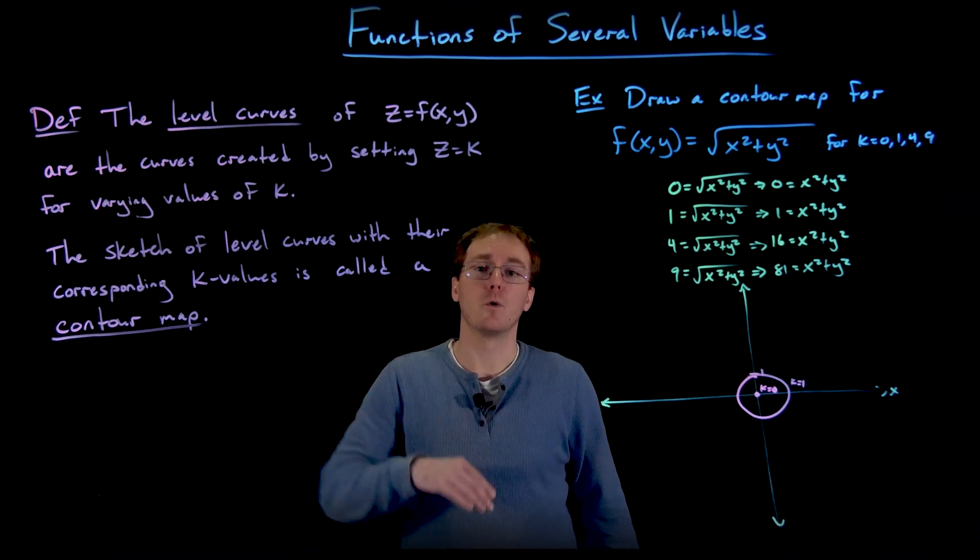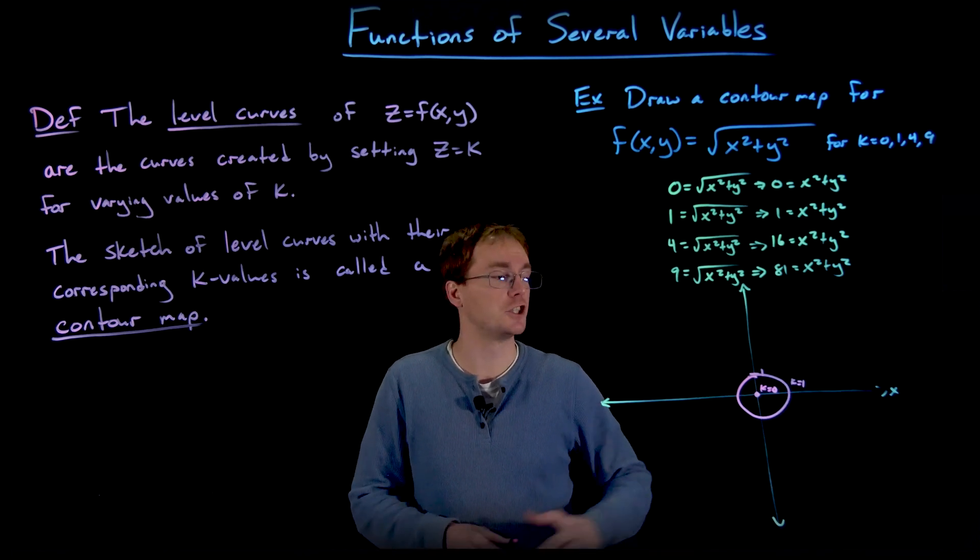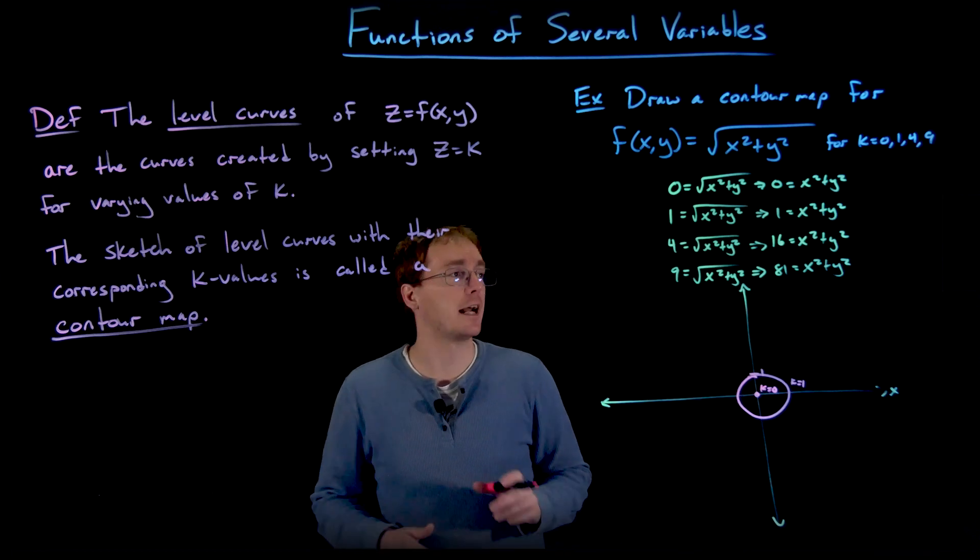The intersection of the z = 1 plane with our surface is going to generate this circle of radius 1 centered at the origin.